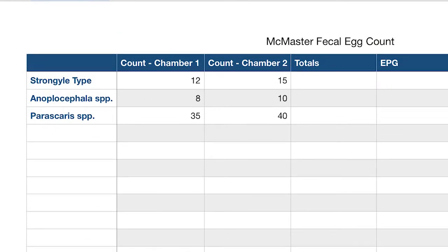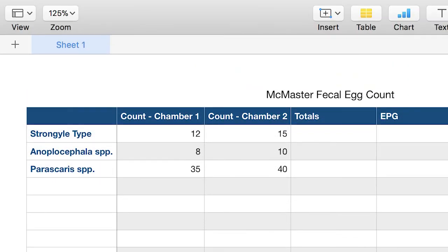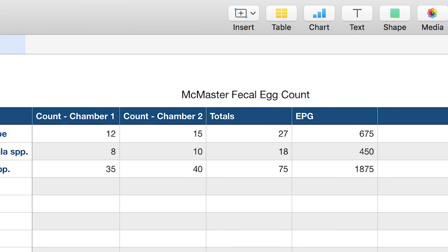Once you have finished, you're going to add up all of your egg totals and then multiply them by 25 for horses to get your total eggs per gram.